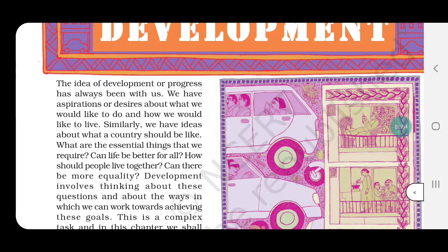Hello students, welcome to AS Tutorials. Today we are going to start economics. In 9th standard, we started economics and studied about factors. We studied about economic activities, and then we saw how production is done — what are the factors of production: land, labor, capital, entrepreneur. So we studied all this in our 9th standard.